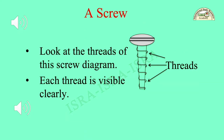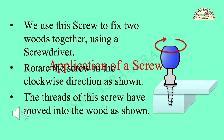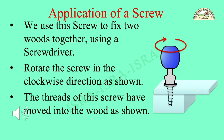Look at the threads of this screw diagram — each thread is visible clearly. We use this screw to fix two bolts together using a screwdriver. Rotate the screwdriver in the clockwise direction as shown. The threads of this screw have moved into the bolt, as visible in the diagram.